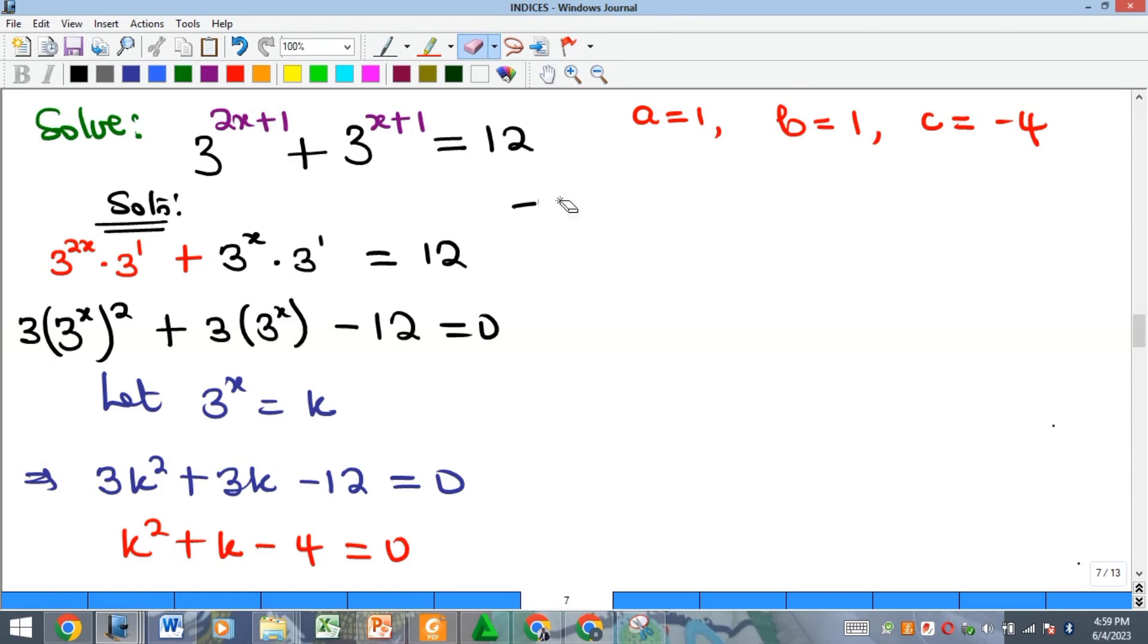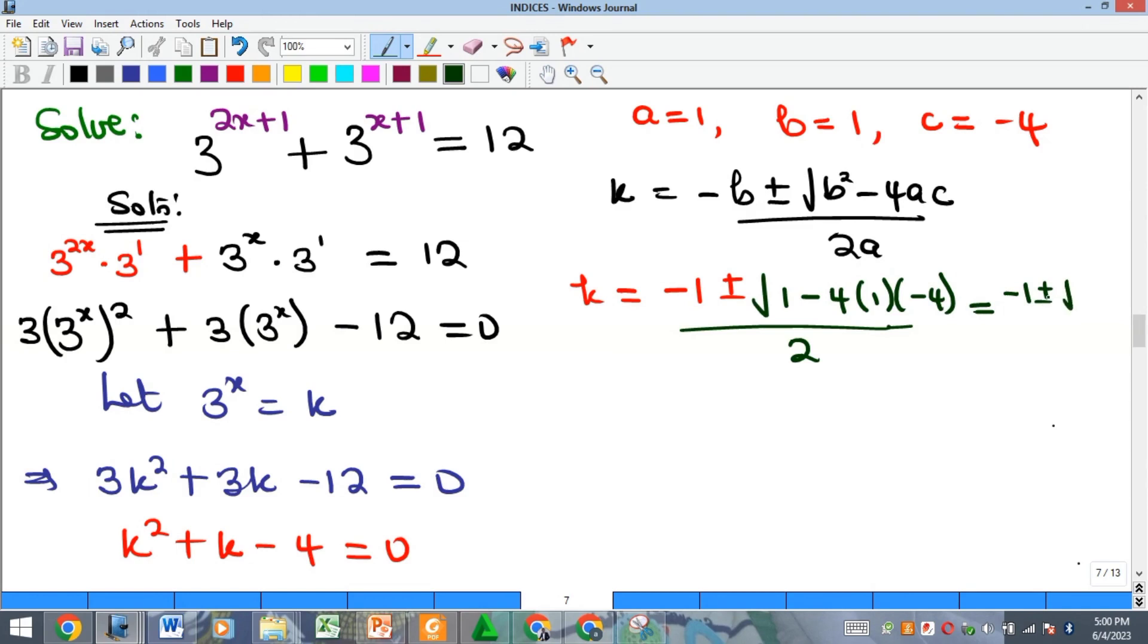So the simplest thing we can do here is to use formula method. So recall our formula method, it says that k is equal to minus b plus or minus square root of b squared minus 4ac all over 2a. Okay, so let's try to make substitutions, so that means our k will be equal to negative 1 plus or minus square root of, so if we go ahead to simplify further, we'll have minus 1 plus or minus square root of minus 4 times 1 is minus 4 times minus 4 is 16.